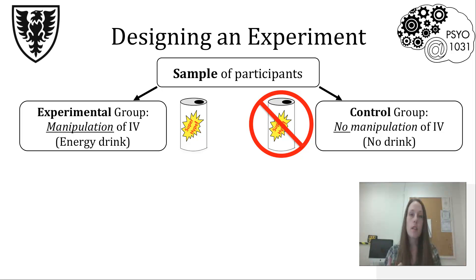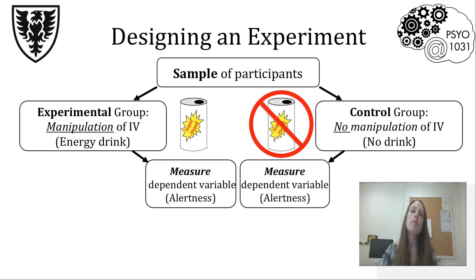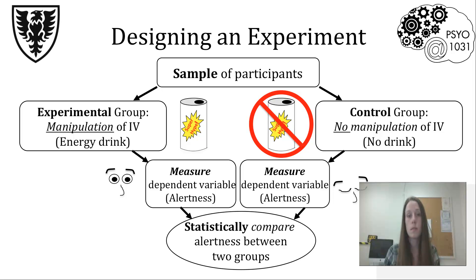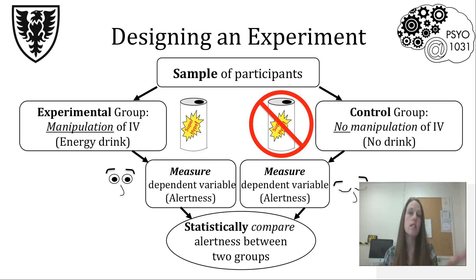After we do that — give some of them the energy drink and not others — we're interested in how alert it makes those individuals. In the experimental group we measure alertness, which is our dependent variable. We measure the exact same thing in the control group to see if there's a change in their alertness, and then we statistically compare the two groups. If the energy drink worked, I would expect to see an increase in alertness in the group that got it and no increase in the group that didn't.